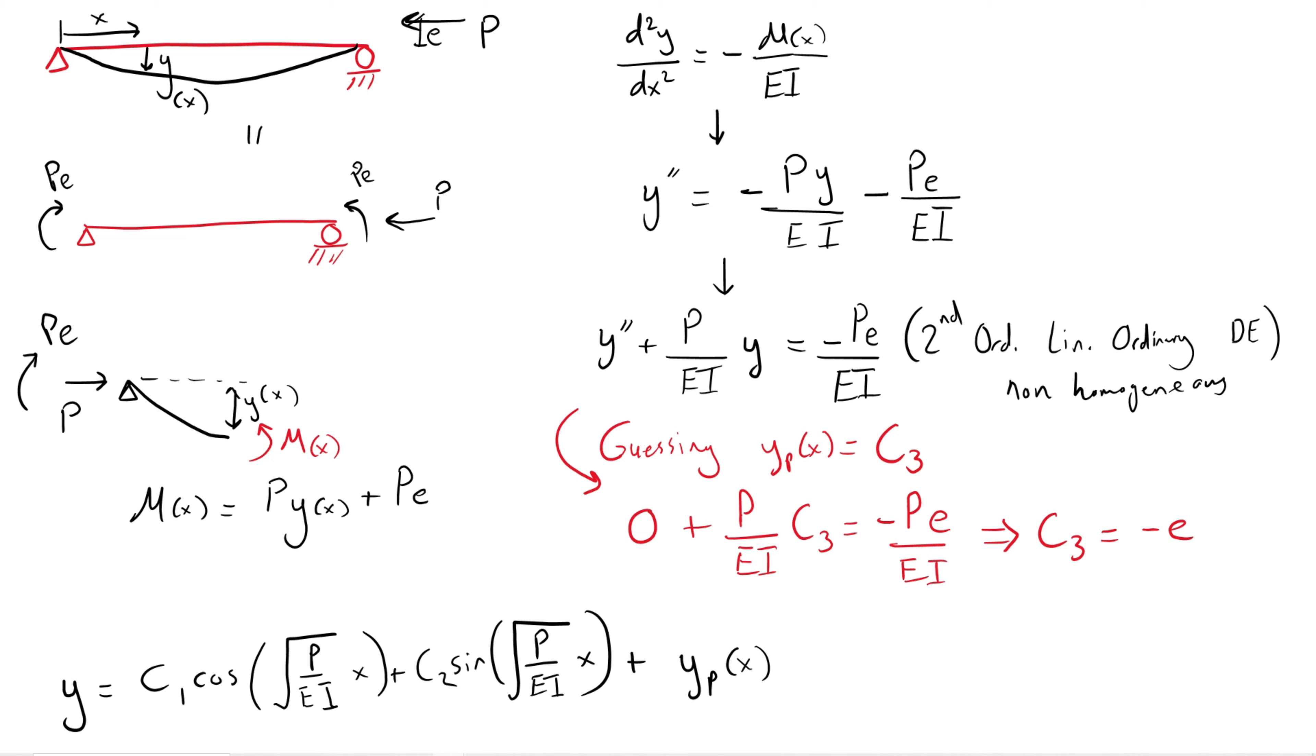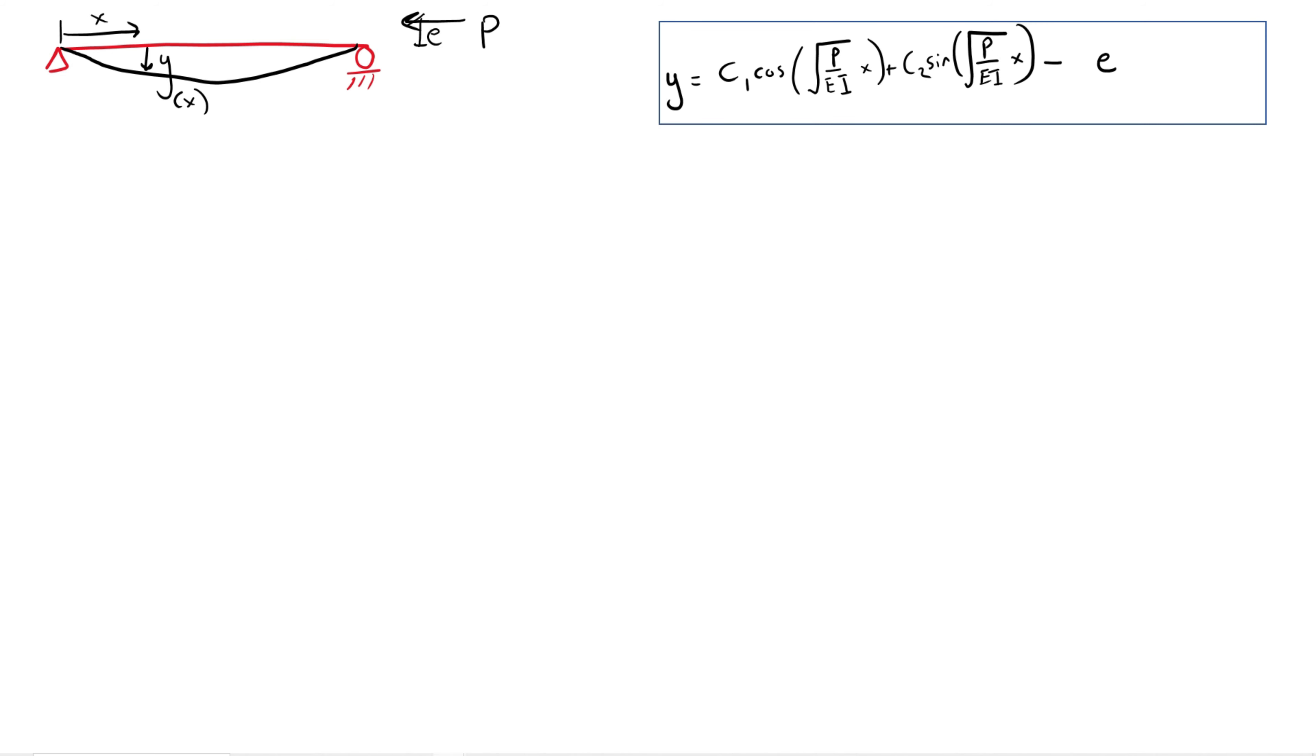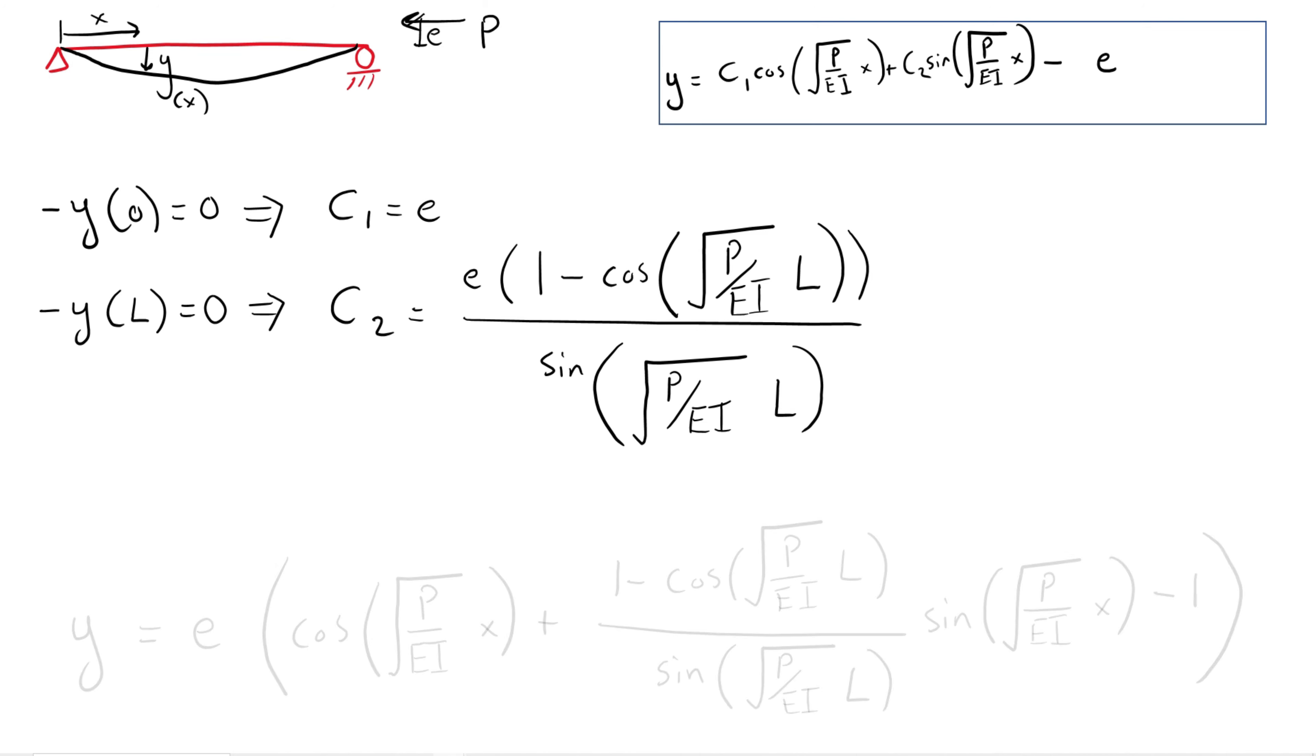Because the non-homogeneous term is a constant, we can guess a constant particular solution, C3. Because the derivative of a constant is zero, the second derivative part vanishes and we obtain the value of C3 as negative E. This means that the particular solution is now negative E as well.